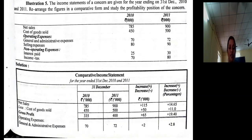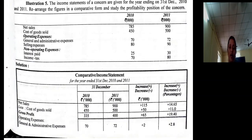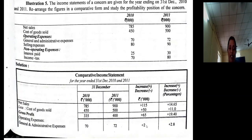We need to concentrate on the next two columns. There is an increase in net sales of 115 rupees. 115 divided by 785 into 100 is 14.65%. There is an increase in cost of goods sold by 50 rupees. 50 divided by 450 into 100 is 11%. There is an overall increase in sales by 14.65% over the period of two years. Cost of goods sold also increased, but not to that extent — it increased by 11%, almost nearing the change in sales. There is an increase in gross profit by 65 rupees; 65 divided by 335 into 100 is 19.4%.